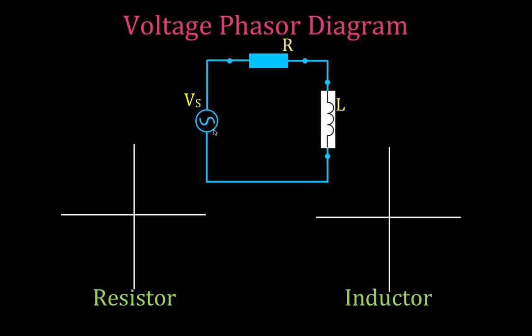In the first part of this video, I'm going to show you how to draw the phasor diagram for the voltage across the resistor and the voltage across the inductor, how to calculate the voltage of the source, and how to calculate the angle between the current and the voltage for this RL circuit. As a little review: if you have a purely resistive circuit, the current and the voltage across the resistor are in phase. That means when we draw the vector for the current along the positive x-axis, we would also draw the vector representing the voltage across the resistor along the positive x-axis.